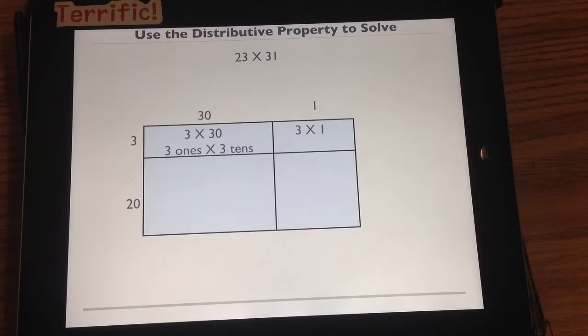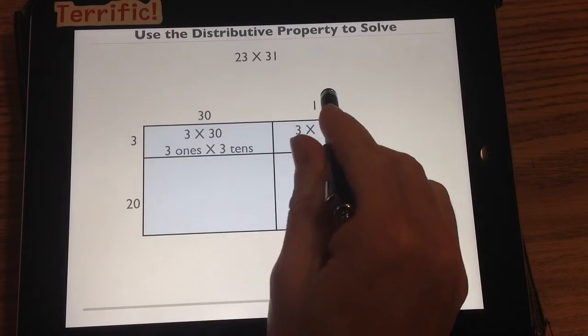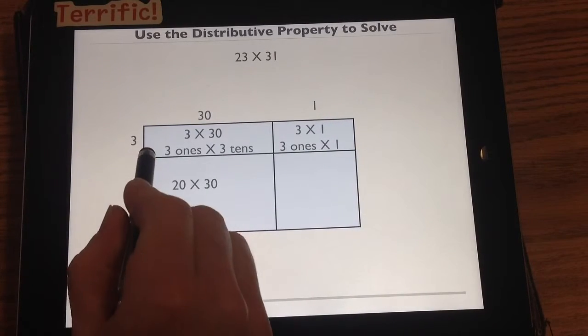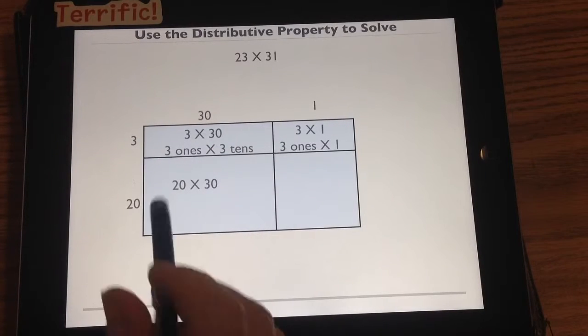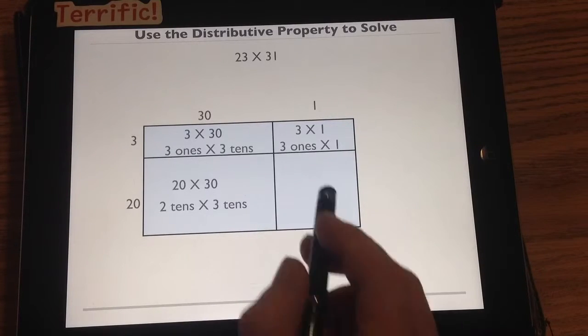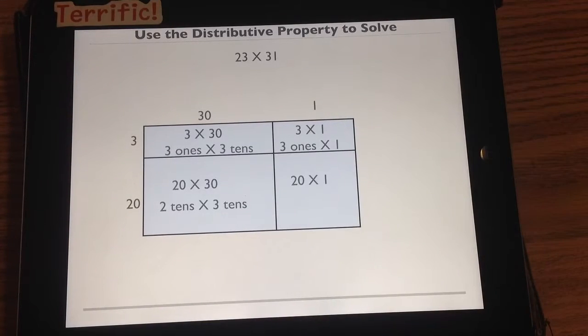Next rectangle, 3 times 1 gives me the area, or 3 ones times 1. Next rectangle is 20 times 30. Length times width of this rectangle. Unit form, 2 tens times 3 tens. And then our last rectangle, we have 20 times 1, or 2 tens times 1.